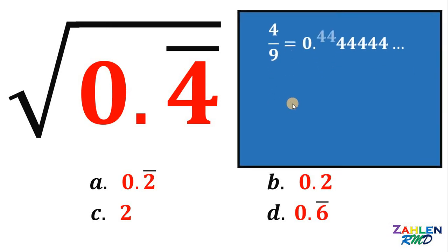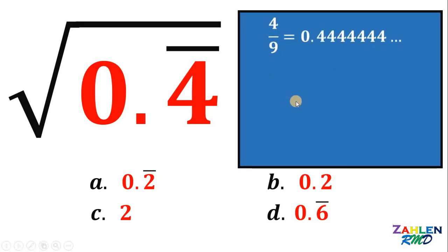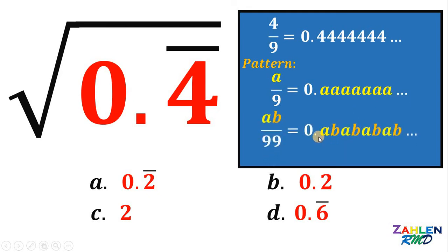The question is, is there a pattern for this result? And of course, there's a pattern. If we have a over 9, this can be written as 0.AAAAAA forever. And if we have a two-digit number, let's say 0.AB AB AB repeating, 2 digits repeating, we have equivalent to AB all over 99.